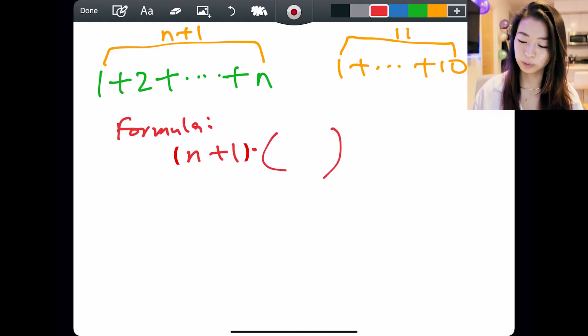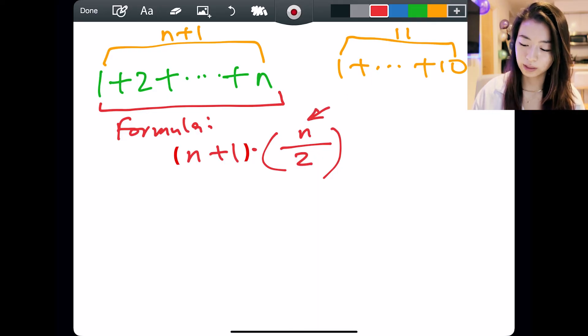And what is the number of pairs? That's just going to be the number of numbers you count divided by 2. And for 1 all the way to n, it's always going to be n numbers you count. So that's why this is the number of pairs.